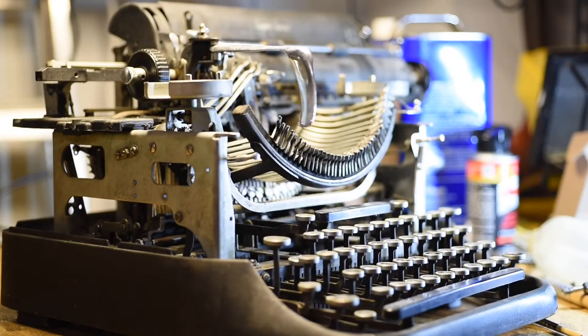We are out in the garage today for another repair video. This is a later model LC Smith standard, particularly the Smith Corona Super Speed. This machine is almost mechanically identical to all of the older LC standards down to the proprietary LC ribbon spools. What we're going to go over today is how to replace key levers.